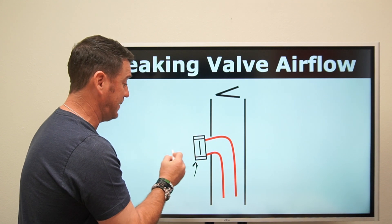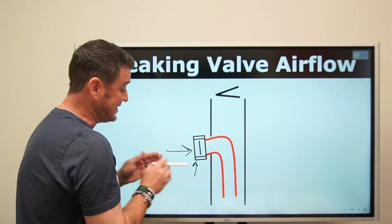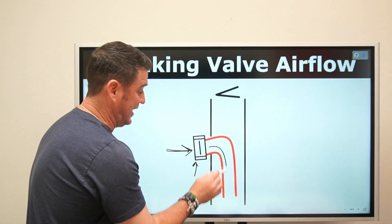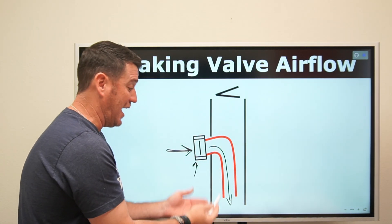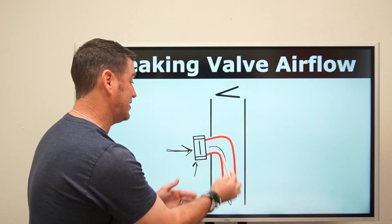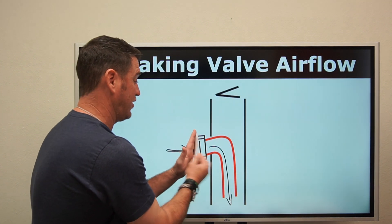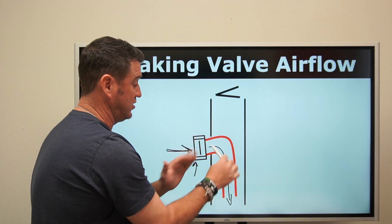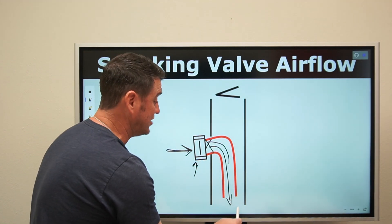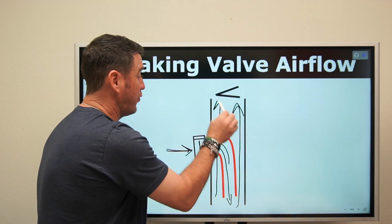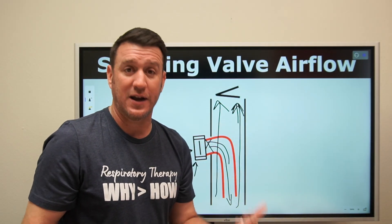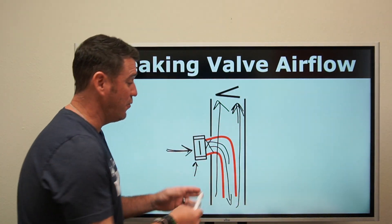When the patient inhales, air is allowed to come in through the one-way valve and goes down to the alveolar units. On exhalation, when gas starts to come back out, this one-way valve closes — it doesn't let air come back through. So all air is pushed up through and past the vocal cords and exhaled through the upper airway via normal anatomy. That's how it works.